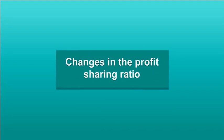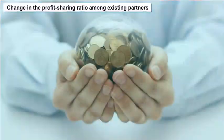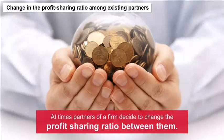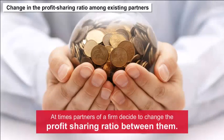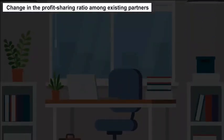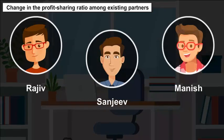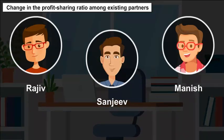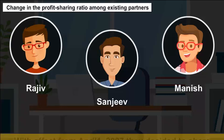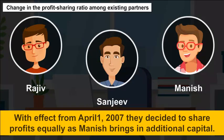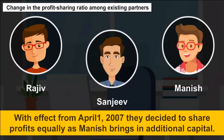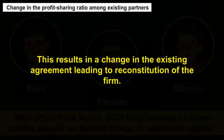Changes in the profit sharing ratio among existing partners: At times partners of a firm decide to change the profit sharing ratio between them. For example, Rajiv, Sanjeev and Manish are partners in a firm sharing profits in the ratio of 3:2:1. With effect from April 1, 2007, they decide to share profits equally as Manish brings in additional capital.